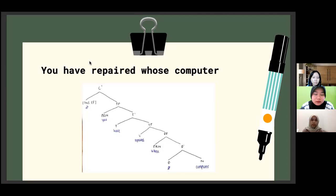That resulting DP then merged with the verb 'repaired' and formed the VP 'repaired whose computer.' In order to form a T-bar, the VP is merged with the auxiliary 'have,' resulting in 'have repaired whose computer.'